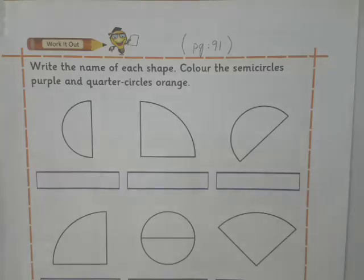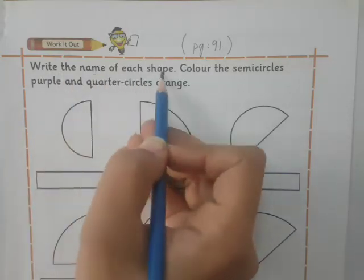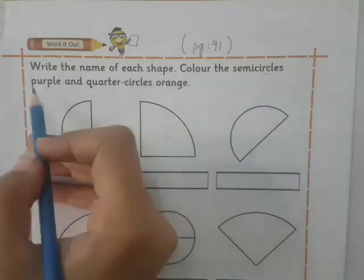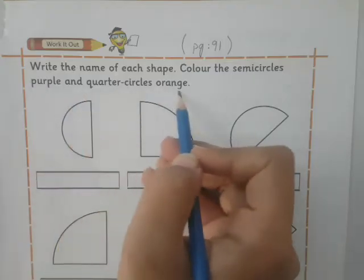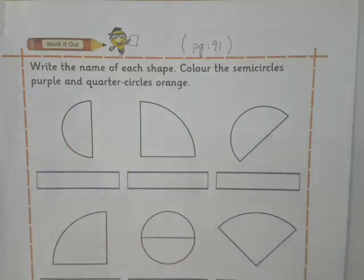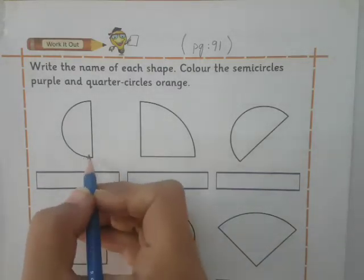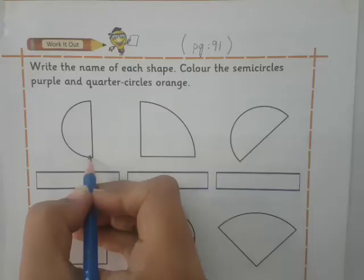The question is: Write the name of each shape. Color the semicircles purple and quarter circles orange. First, write the name of each shape with me. The first one shape is, is it semicircle? Yes, it is.